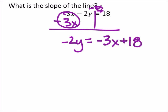Plus the 18. Is everyone okay with what I just did there? Alright, now we need the coefficient of y to be 1. So to isolate it, we're gonna divide all the terms by negative 2.